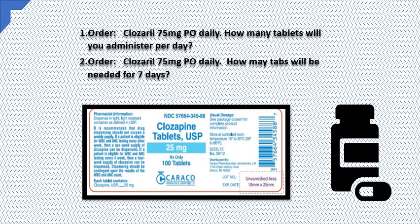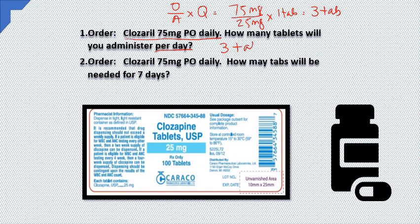Problem 1: Order Closarol 75 mg PO daily — how many tablets will you administer per day? Using order over availability times quantity: 75 mg divided by 25 mg per tablet, times 1 tablet, equals 3 tablets. The answer is 3 tablets daily. Even though the question asks 'how many tablets per day,' you still need to include your units in your answer.